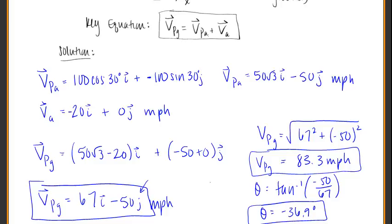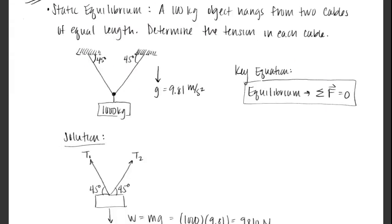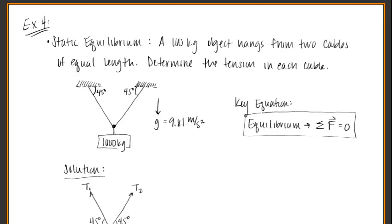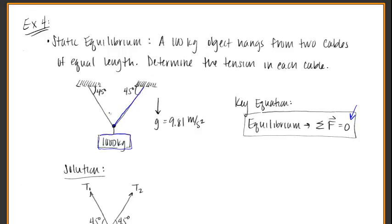Let's keep going and look at our very last problem of this project: static equilibrium. You have a 100-kilogram object hanging from two cables of equal length, and we want to determine the tension of each cable. Everything is in equilibrium — the object is not swaying either way — so the sum of the forces equals zero. The force each cable provides equals out with the force of gravity pushing against it.